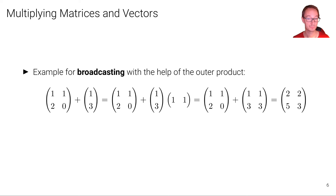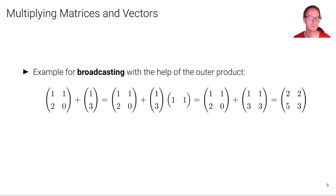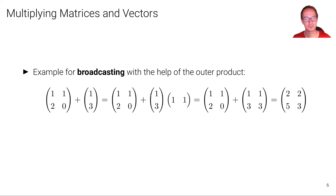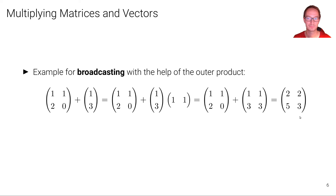We can also connect broadcasting to the outer product. The broadcasting operation we defined mathematically before can also be defined explicitly using the outer product. We have the same example from before: broadcasting 1, 3 to a 2-by-2 matrix and adding it. We compute the outer product between vector 1, 3 and the vector 1, 1, which replicates the column vector twice, giving us a matrix. We then add that matrix to the original matrix to get the broadcast result.